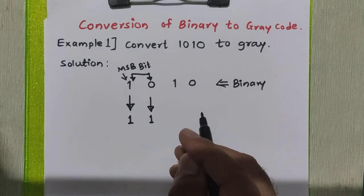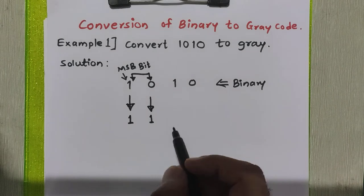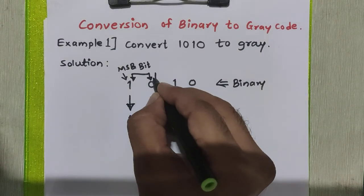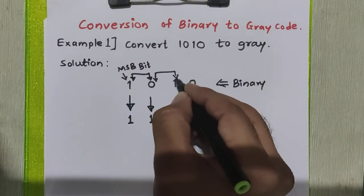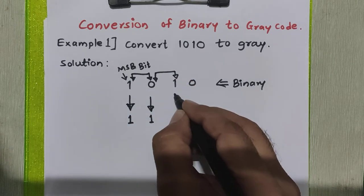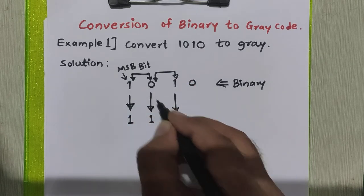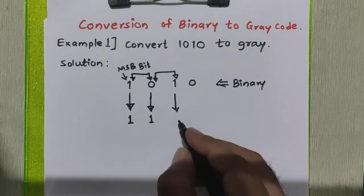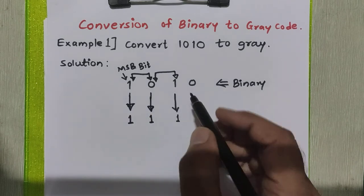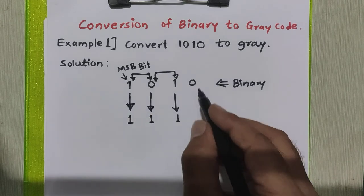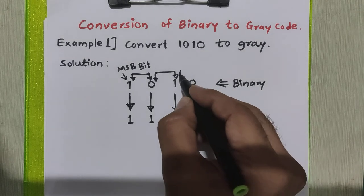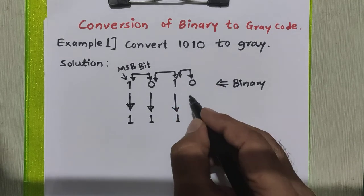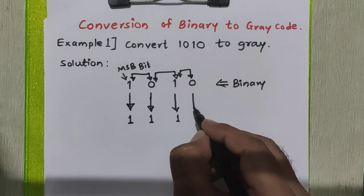To get the third bit of this grey code, we will add the second binary bit with the third binary bit, and the sum will be written into the grey code. So 0 plus 1 is 1. To get the last bit, we have to add the third bit of binary with the fourth bit, and we write the sum here.